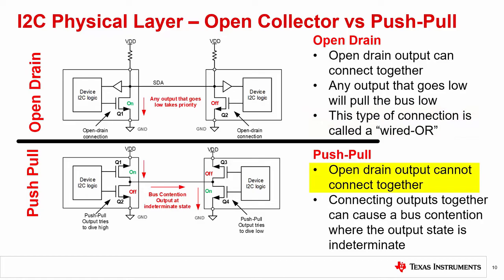If the outputs were a push-pull type, they could not be tied together without the possibility of a destructive state. A push-pull output has complementary NMOS and PMOS transistors that drive the output high or low. Tied together, if one output is high and another output is low, this bus contention would have an undetermined state, possibly settling at the mid-supply point. Additionally, one device has NMOS conducting current and another device has PMOS conducting current. This would source current from VDD to ground through a very low impedance path, conducting as much current as the transistors would allow. This could be a significant amount of current, potentially damaging the devices.